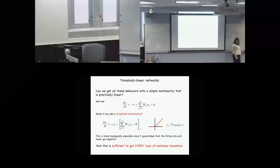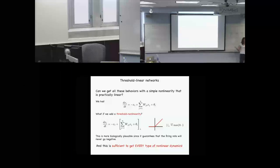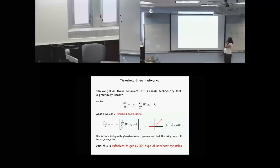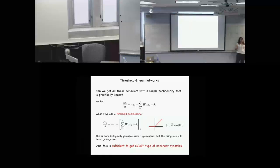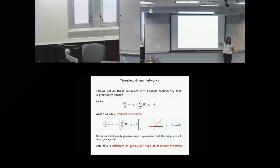It turns out that this relatively simple nonlinearity is actually enough to get you every type of nonlinear dynamics that you might want. I can show you networks that do all of those things. Much of the study of these networks, until the last five years, had been focused on the symmetric case — inspired by symmetric Hopfield networks. In the symmetric case, you can prove you actually only get stable fixed points. It's not until relatively recently that we're seeing these other phenomena.